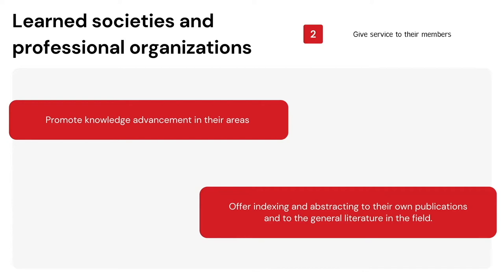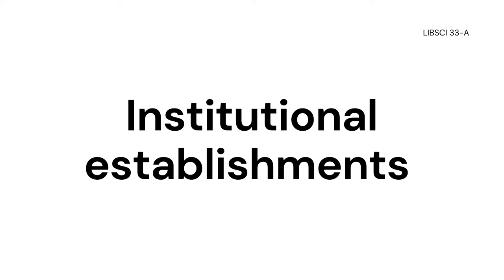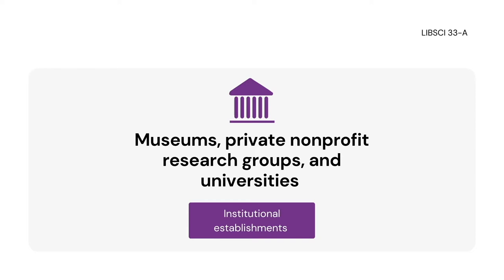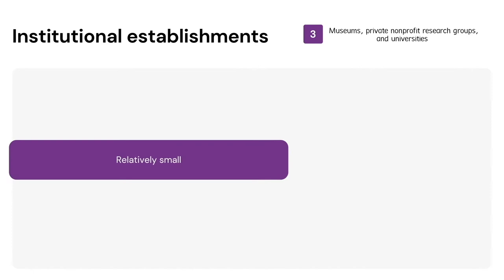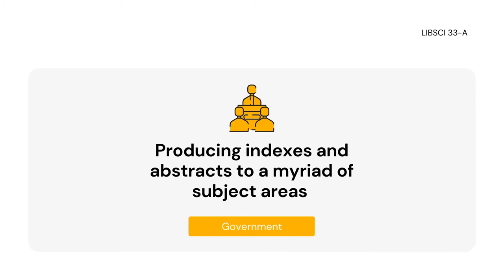The third are the institutional establishments. Institutional establishments include such organizations as museums, private nonprofit research groups, and universities. Their overall portion of indexes and abstracts is relatively small, but by no means unimportant. The fourth is the government. Government agencies contribute considerably more, producing indexes and abstracts to a myriad of subject areas.